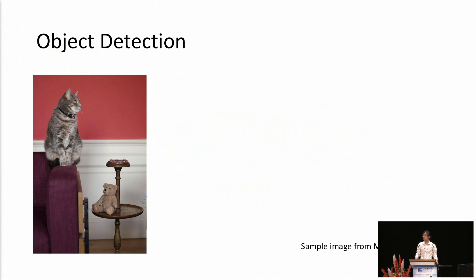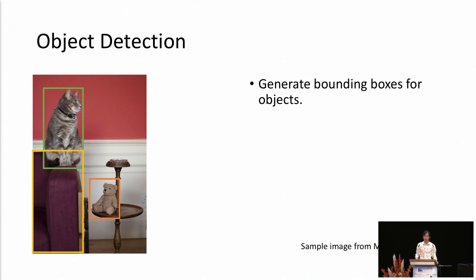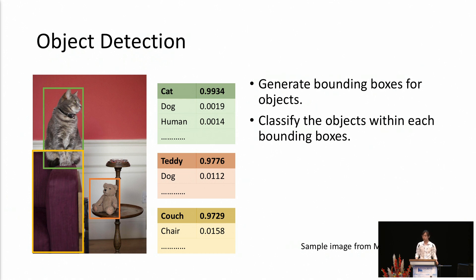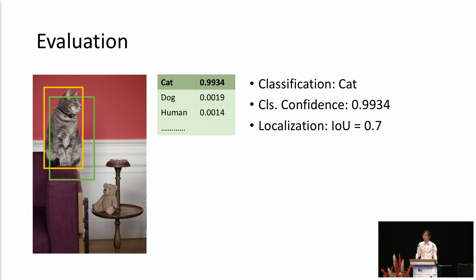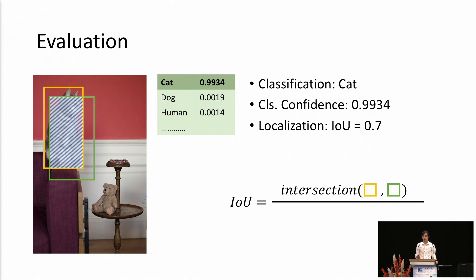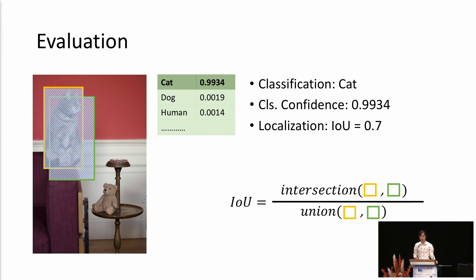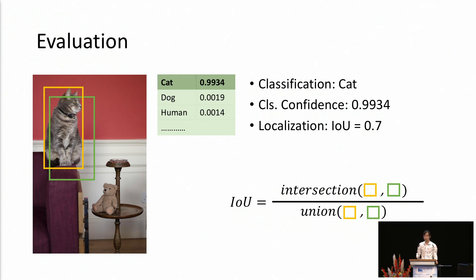Object detection is composed of two parts. First, we need to generate bounding boxes for objects. Next, we need to classify the objects within each bounding box. To evaluate the localization of the detected bounding box, usually we compute the IOU of the ground truth bounding box shown in yellow and the detected bounding box shown in green. The IOU is computed as the intersection of these two boxes over the union of these two boxes.